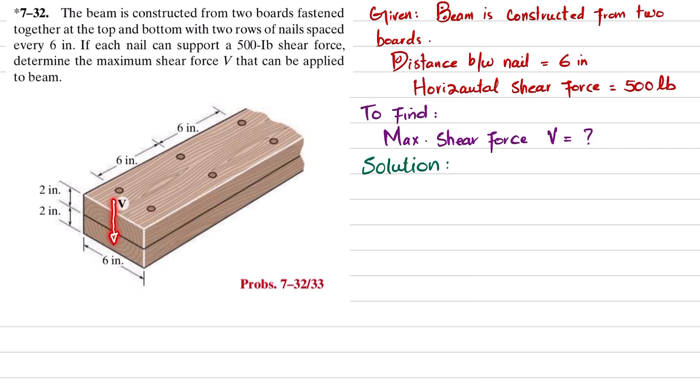So you have to determine this vertical shear force that can be applied to this beam. Let's start with the solution. As we know, maximum shearing stress is equal to VQ divided by I times t.